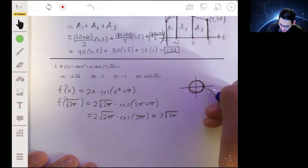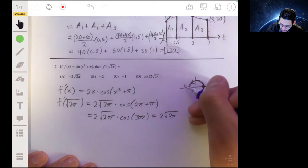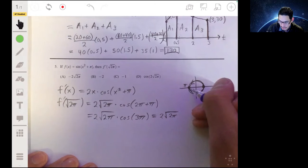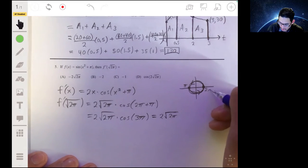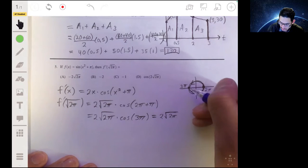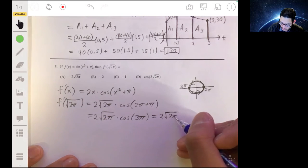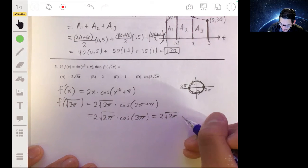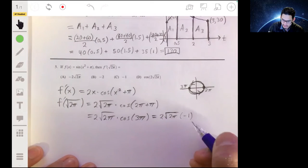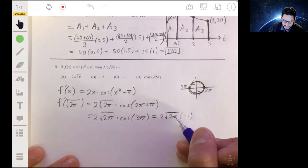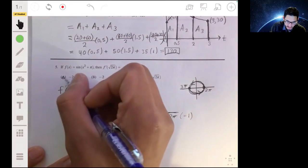So you have 2 times the square root of 2 pi. Make sure you know your unit circle. 3 pi will be on the left side. It's basically going to coincide with 180 degrees. If you start at 0, we go this way. Over here, that's pi. You keep on going counterclockwise. This is 2 pi. Another pi, you're going to be back here. So that's going to be negative 1. So 2 times the square root of 2 pi times negative 1. You get negative 2 times the square root of 2 pi. So your answer will be A.